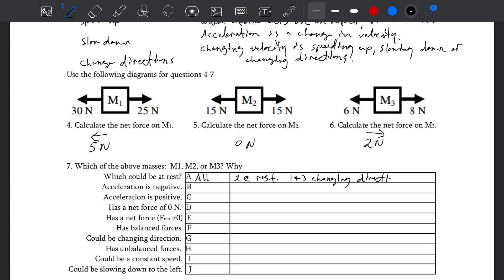B, acceleration is negative. For acceleration to be negative, that means it's in the leftward direction. Net force and acceleration move in the same direction. So M1, since the net force is to the left, acceleration is to the left, left is negative. C, acceleration is positive. To the right is positive. Net force to the right means acceleration is to the right, so M3.